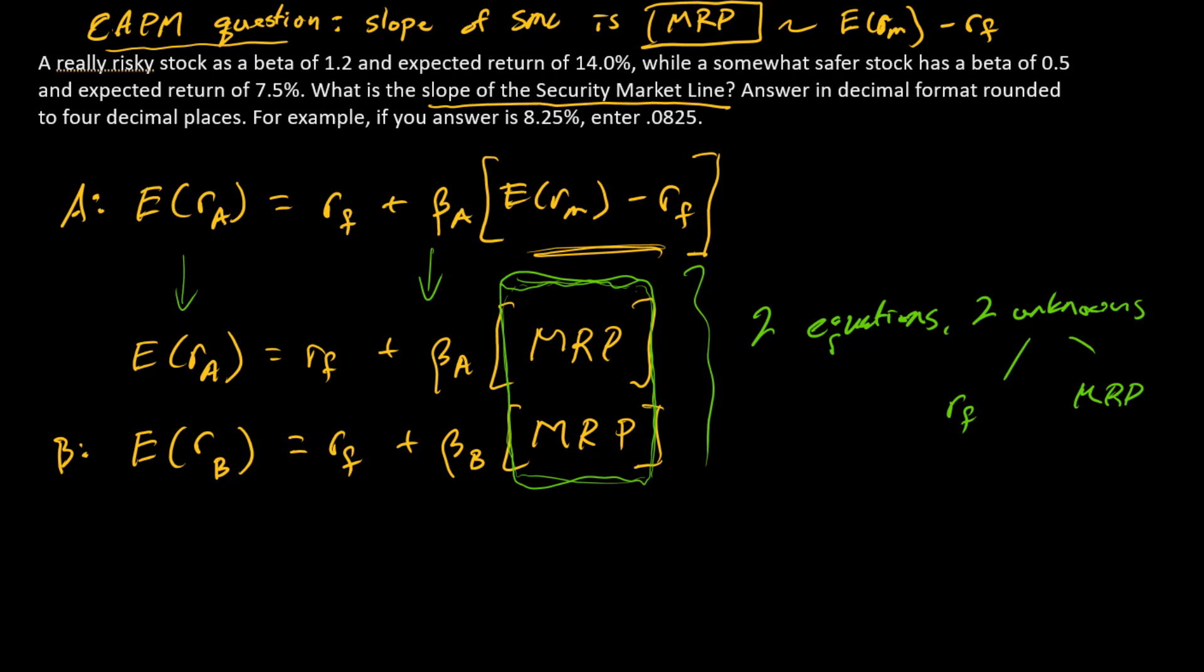And so in order to do this, I'm going to, as a first step, solve for each equation individually as RF and then substitute in. And then I'll find the market risk premium. So solving each for the risk free rate.